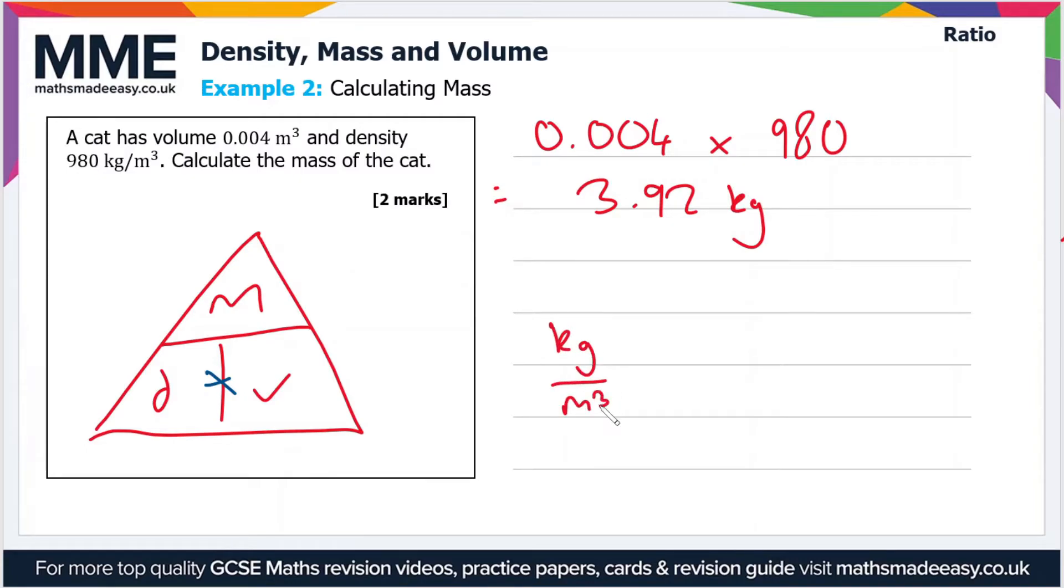If you have kilograms per meters cubed and you times that by meters cubed, you end up with kilograms meter cubed divided by meter cubed. These meters cubed cancel and you just end up with kilograms. This is called dimensional analysis. You don't need to worry about it for now, but all you need to know is that the mass of the cat is in kilograms.